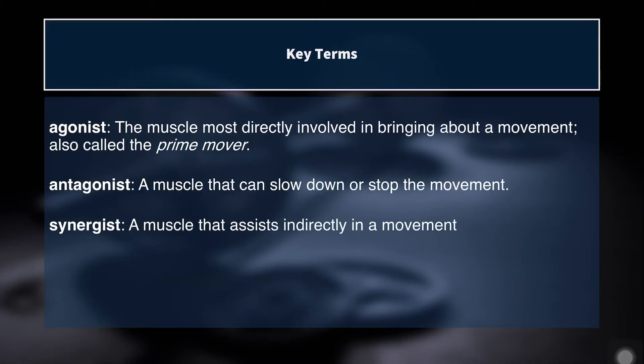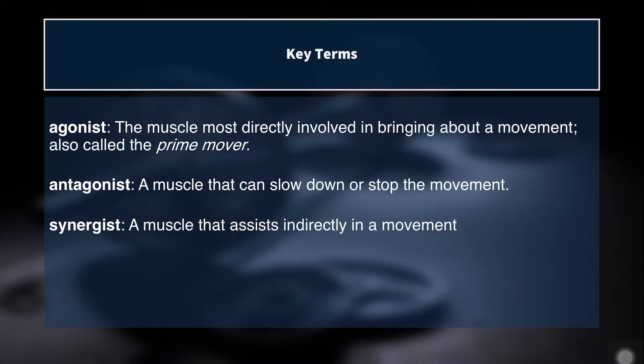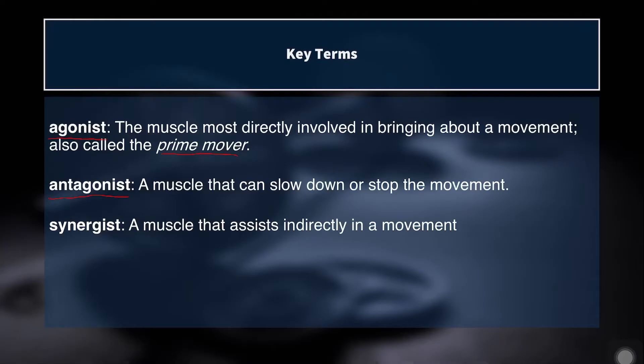We also have a classification system for determining what a muscle's action is during a movement. If a muscle is causing a movement — say I'm doing a biceps curl, so my biceps is causing my elbow to flex — I would call the biceps an agonist in that movement: the muscle most directly involved in bringing about the movement. We also sometimes call this a prime mover. The antagonist is the exact opposite — it's a muscle that has the capability of stopping or opposing that motion. So the antagonist in a biceps curl would be the triceps, a muscle that can slow down or stop the movement.